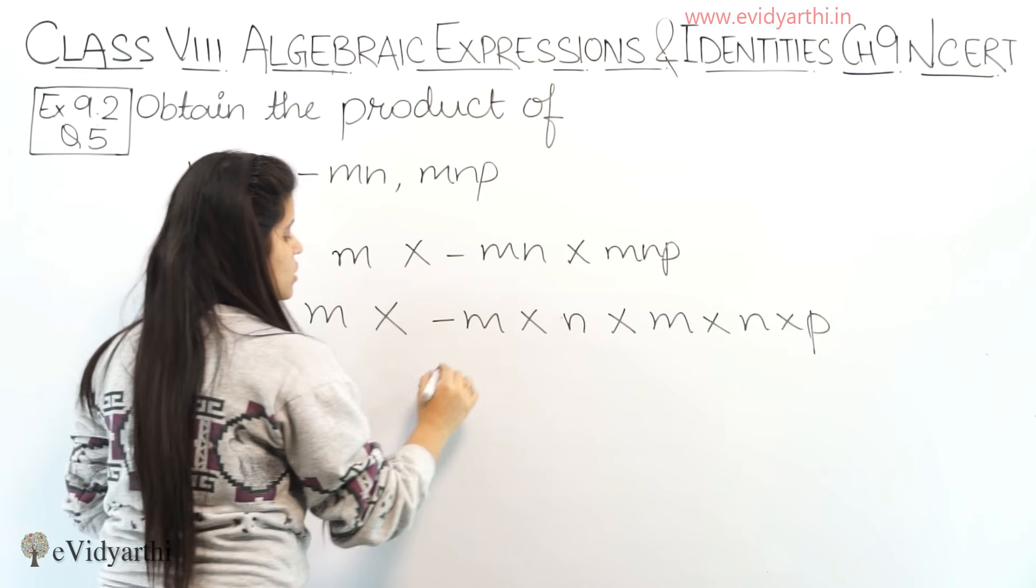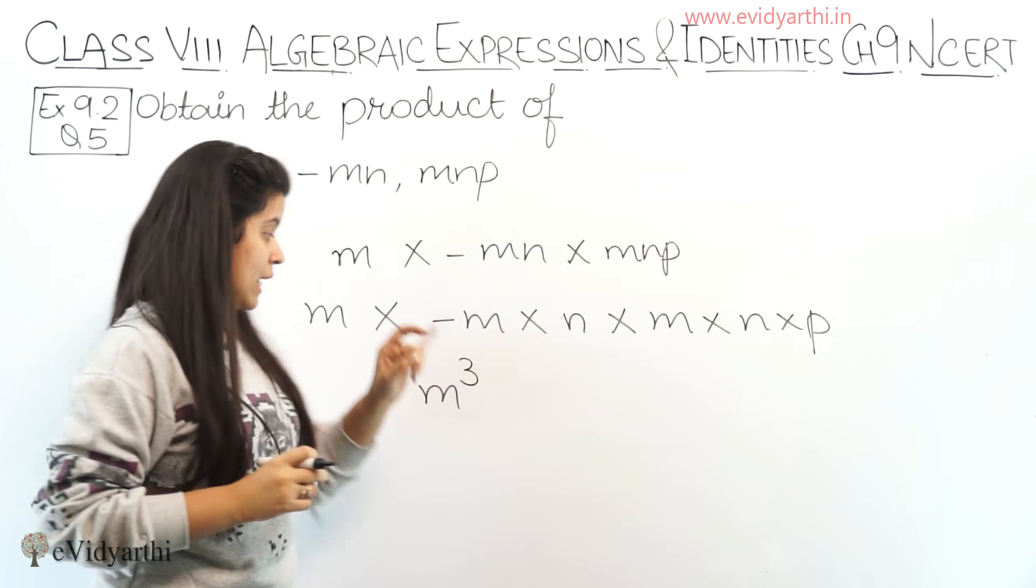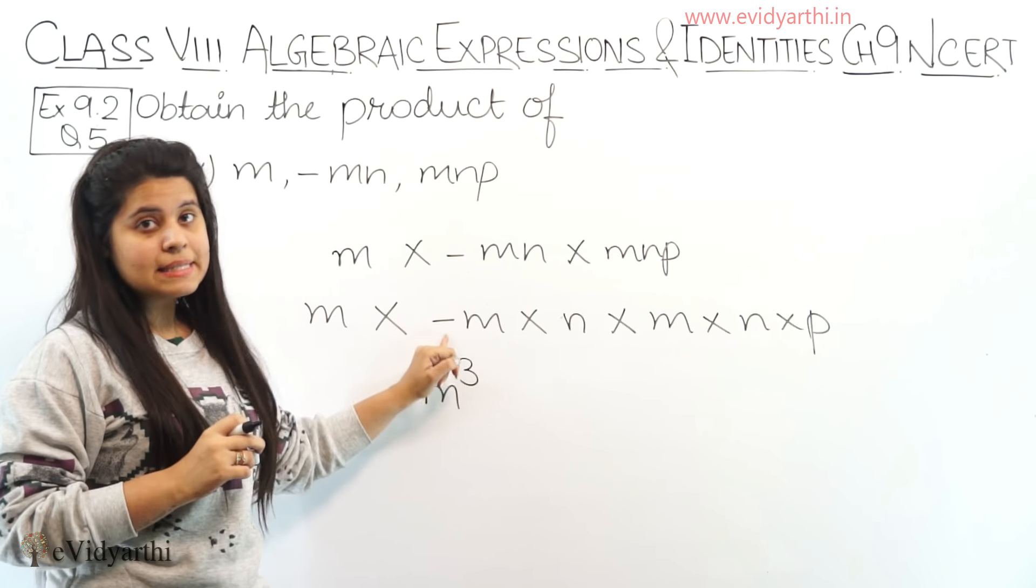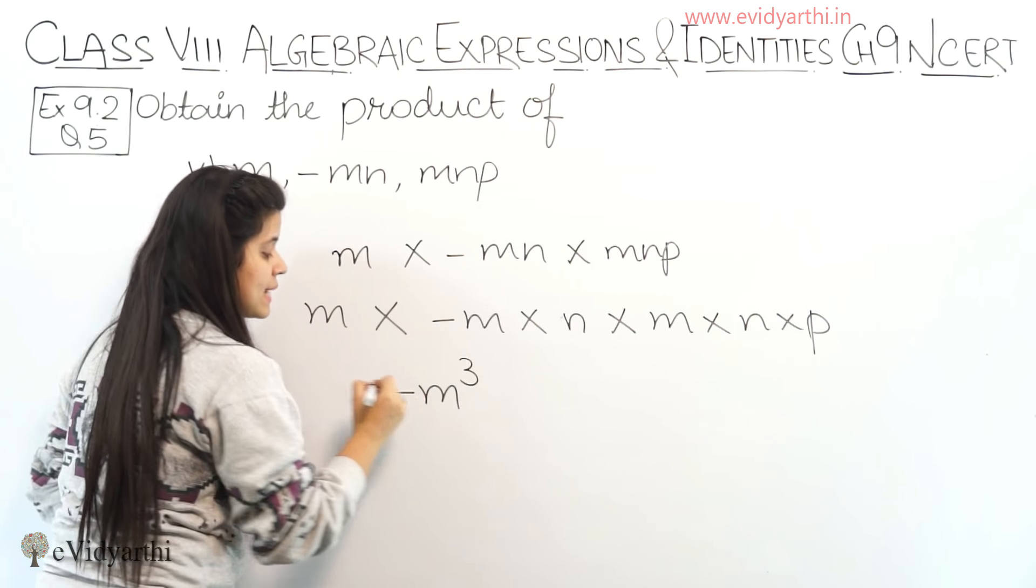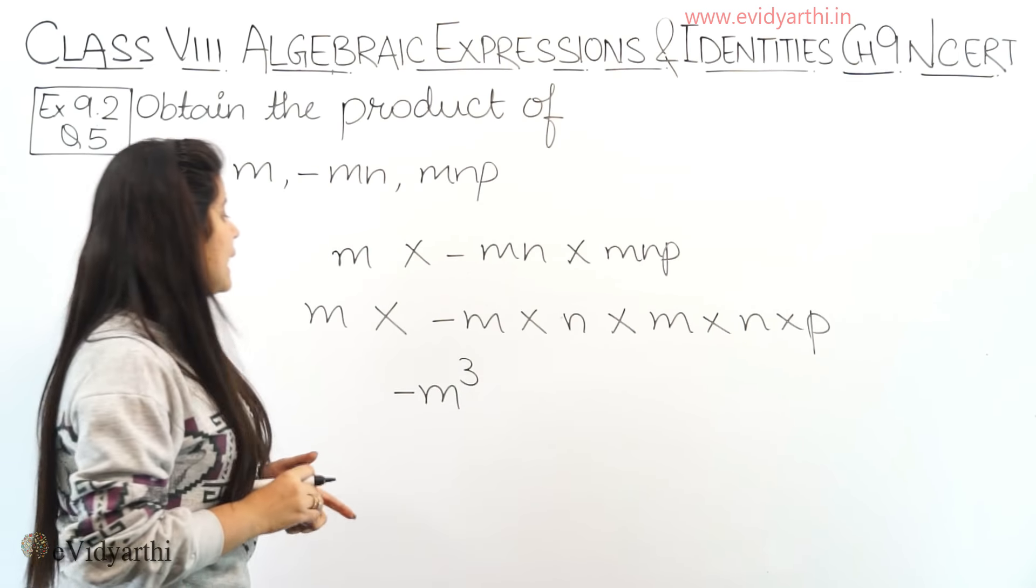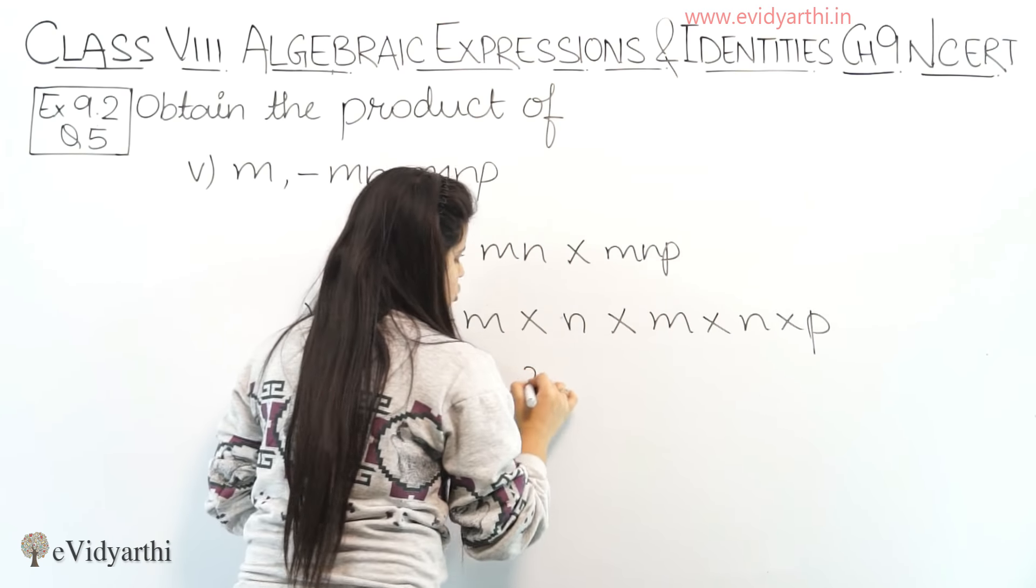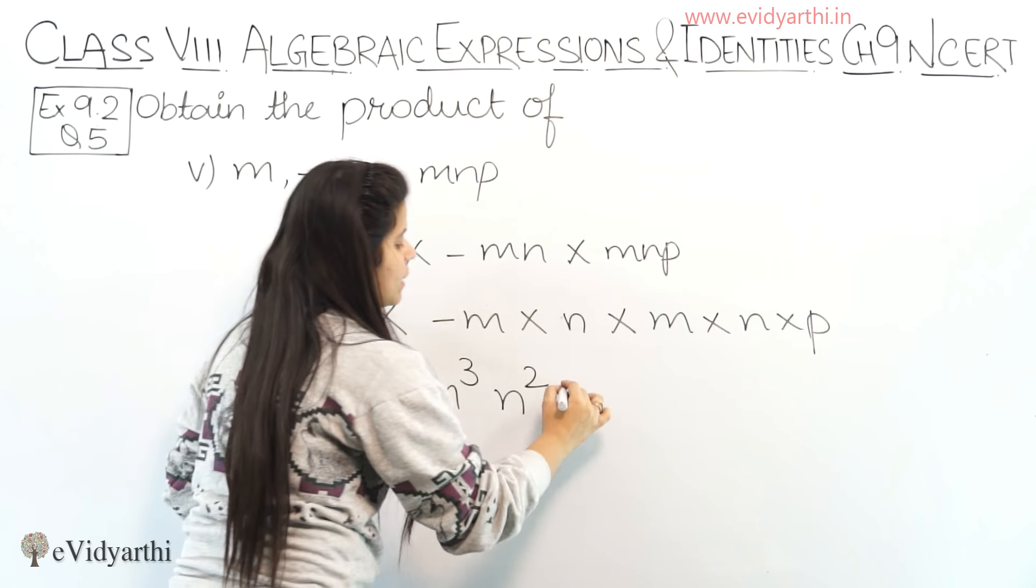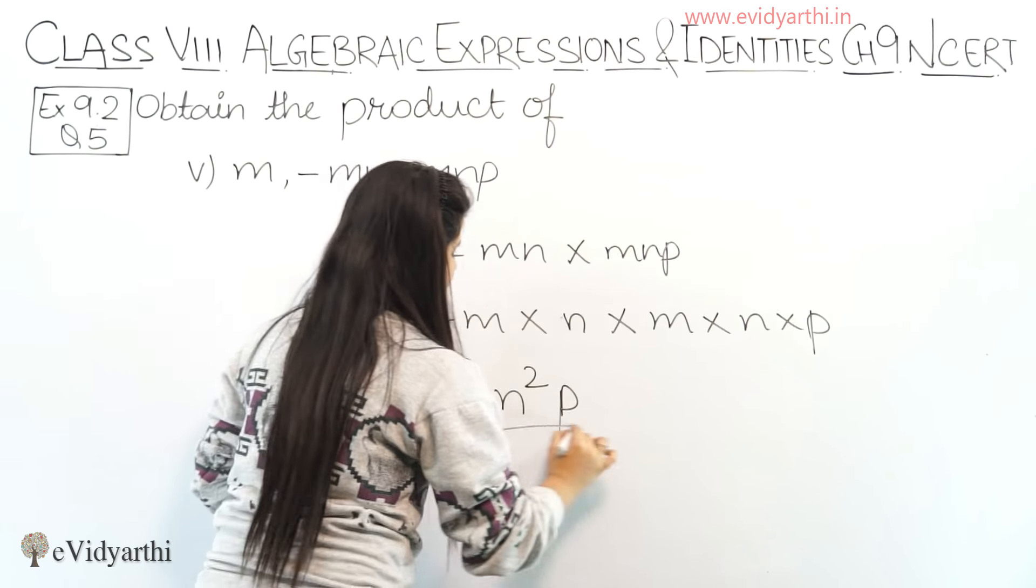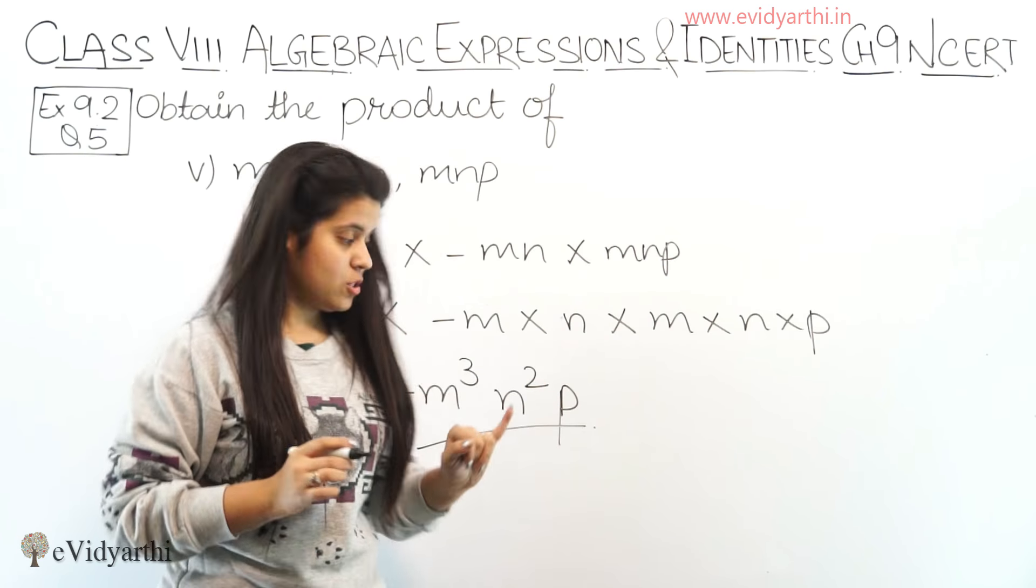And here we have one minus sign. So if we check: plus minus, minus. So this means there's a minus sign here. Then we have n: 1 and 2. So this will become n square. After that we have p variable only once. So the answer will be minus m cube n square p. This was the fourth part and this was the last part and also the last question of this exercise.